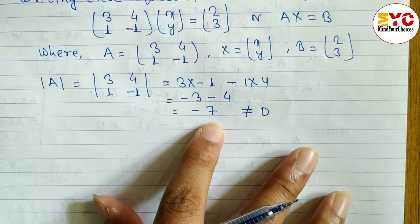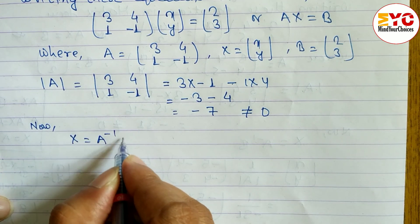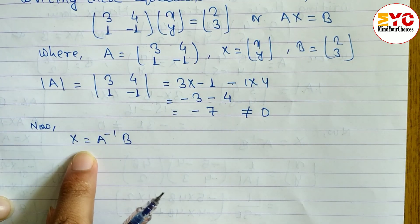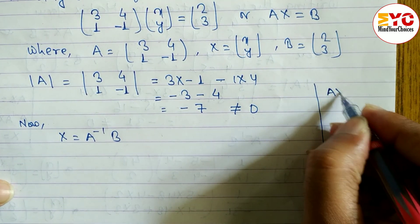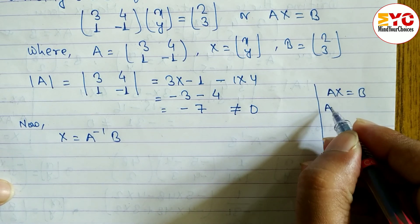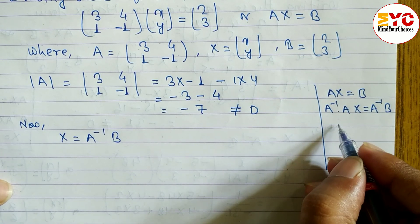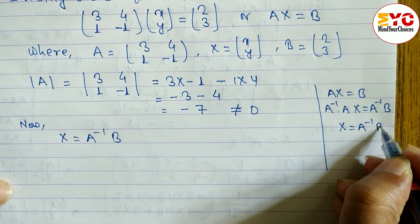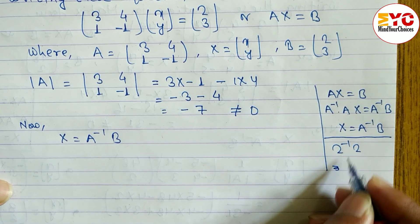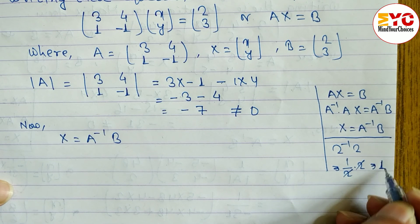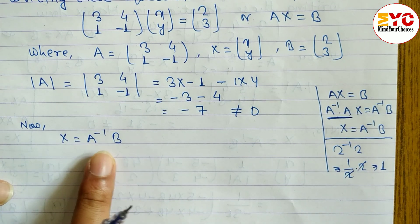Since AX = B, we know that X = A⁻¹B. To derive this: multiply both sides of AX = B by A⁻¹ on the left. A⁻¹A cancels to give the identity, so X = A⁻¹B. This is similar to how 1/2 × 2 = 1, leaving just X.